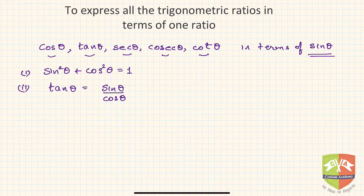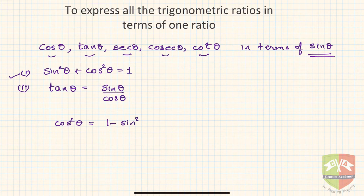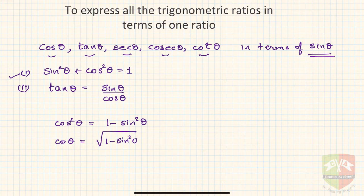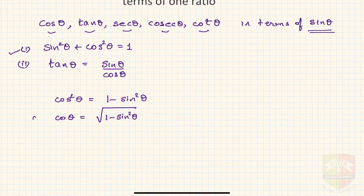From the first identity, I can write cos squared theta is equal to 1 minus sin squared theta, just taking sin squared theta to the RHS. That means cos theta will be nothing but the square root of 1 minus sin squared theta. So we have expressed cos in terms of sin. Let us call this result A.